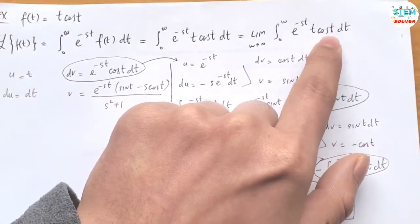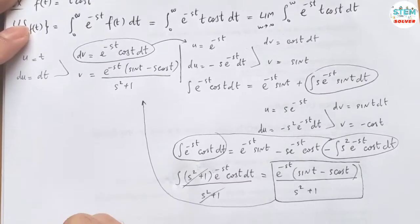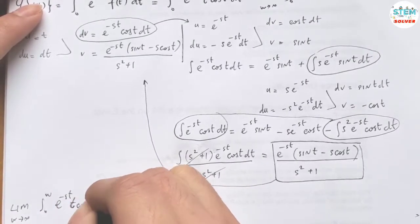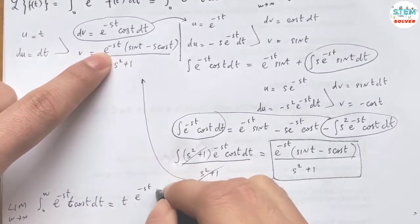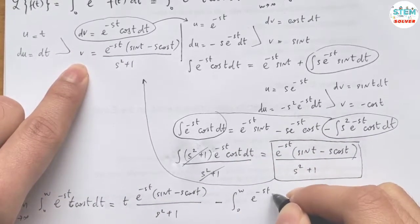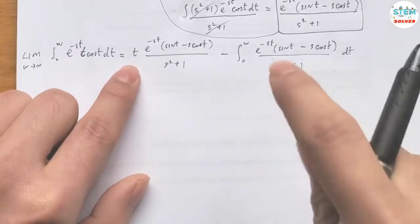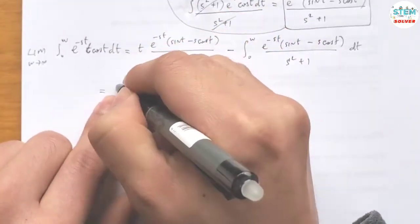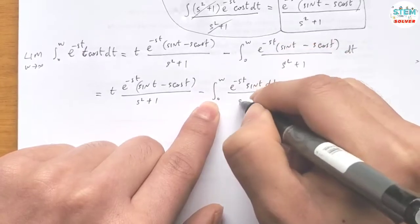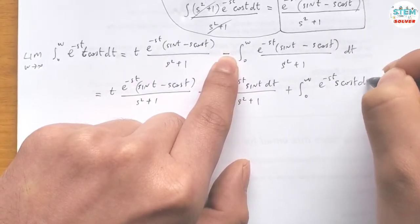Now back to the main integral — we haven't plugged anything in yet. We write the limit as w goes to infinity of the integral from 0 to w of e^(-st)·t·cos(t) dt equals t times the result over (s² + 1), minus the integral of that expression. We split this into two separate integrals over [0, w].